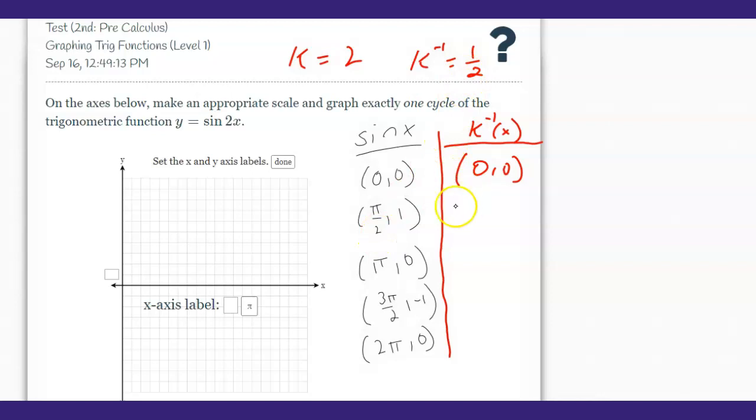Pi over two times one half. For you guys that still struggle to multiply fractions, it's the top times the top, bottom times the bottom. Pi over four, and then right here that's a whole number, pi over one times one half.